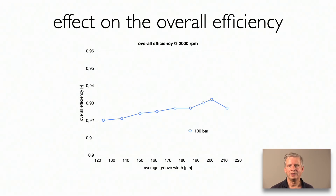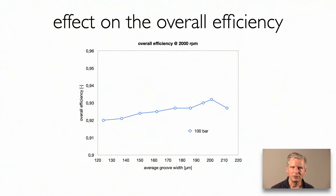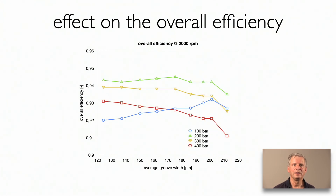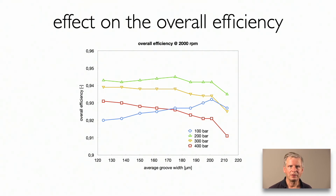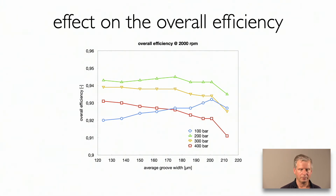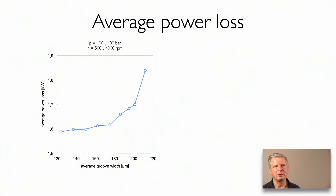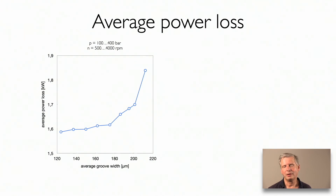If we combine the volumetric and hydromechanical effects, we get a clear view of groove size on overall efficiency. At 100 bar, overall efficiency reduces when grooves are made smaller. But when pressure gets higher, it becomes beneficial to reduce groove dimensions. These diagrams are for a rotational speed of 2000 rpm, and we also performed measurements at other rotational speeds and calculated the average power loss. There is a big gain in the first reductions of groove size; however, below a width of 180 micron, the effects diminish.